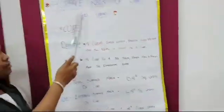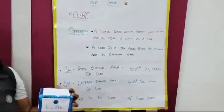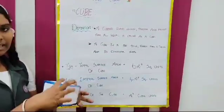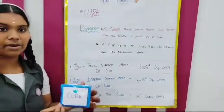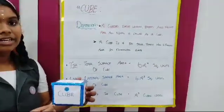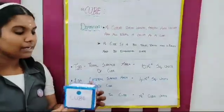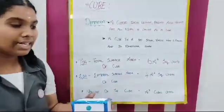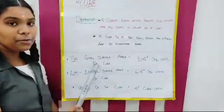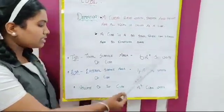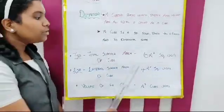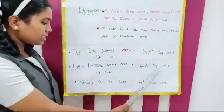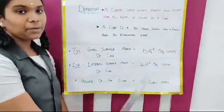Next, we see about surface area of a cube. A cube is a three-dimensional solid whose length, breadth and height are all equal. It has 6 faces: front and back, up and down, and both sides. Let us see some formulas. Total surface area of a cube is equal to 6A² square units. Lateral surface area of a cube is equal to 4A² square units. Volume of the cube is equal to A³ cubic units.